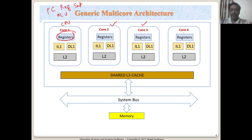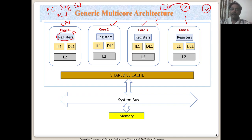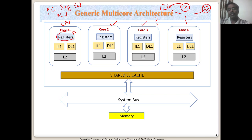Each core can execute a single stream of instructions, meaning each can execute a process or a thread. In Linux, both processes and threads are individual schedulable entities. If I have a CPU, I can put one process in it to execute, or I can schedule one thread into it. Threads can live only within a process and can access the data area and code area of that process, but a thread itself can be scheduled on a CPU.